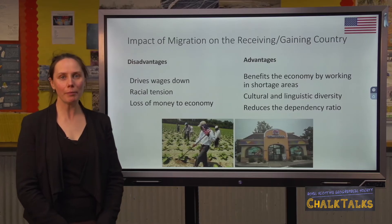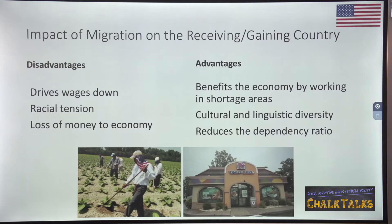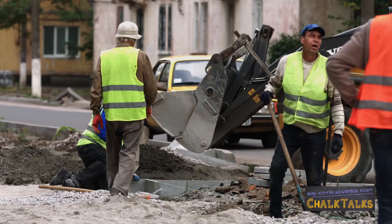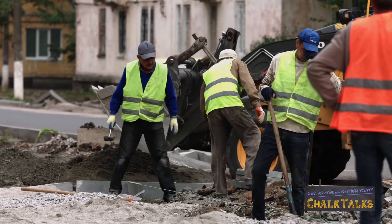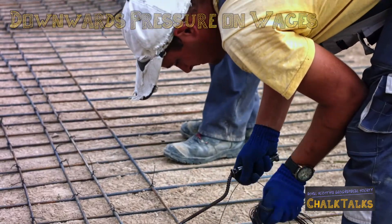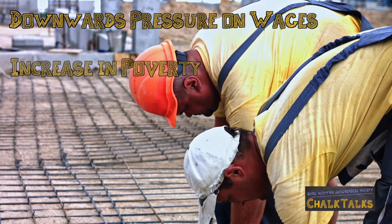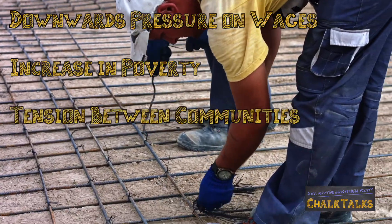You also need to discuss the impact of migration on both the country migrants leave and the one they go to. Looking at the receiving country, the USA: migrants from Mexico who are desperate for work will typically be willing to take on low-skilled, low-wage jobs. This can put downward pressure on wages, lead to American workers being replaced with cheaper migrant labour, increase poverty in the US, and create tension between migrants and locals.